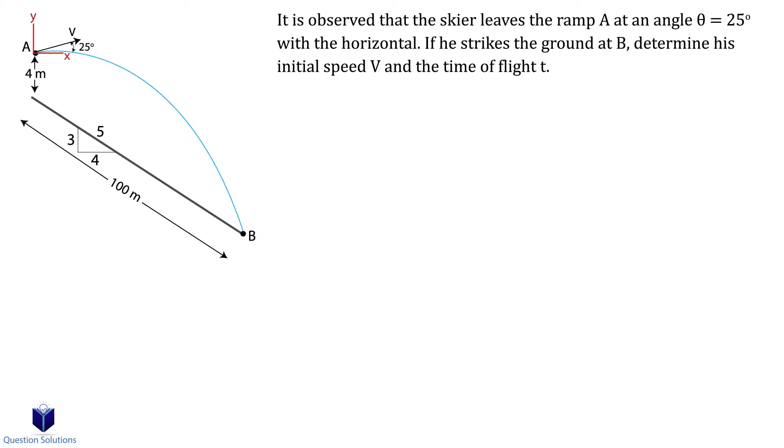In this question, we need to figure out the skier's initial speed and how long he was in the air for between points A and B. Using our simplified diagram and coordinate system, let's write down what we know.